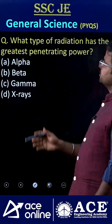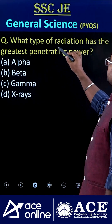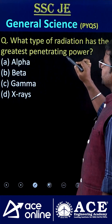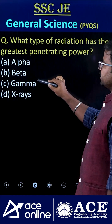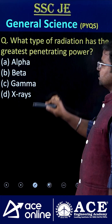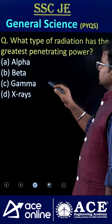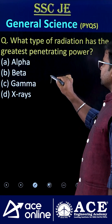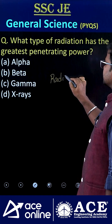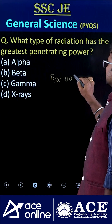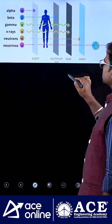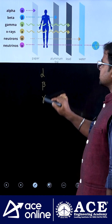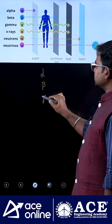Welcome to ACE Online. What type of radiation has the greatest penetrating power: alpha, beta, gamma, and x-rays? If you consider a radioactive element, it mostly emits alpha, then beta, then gamma rays.